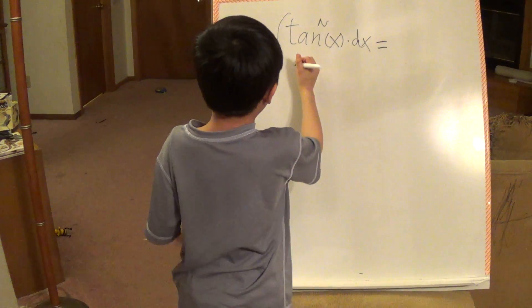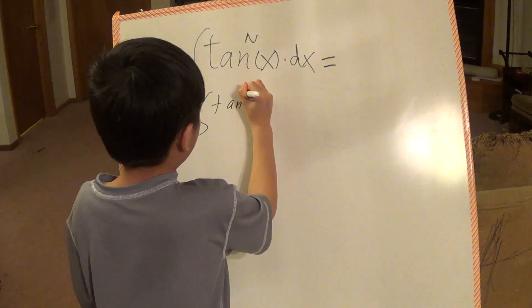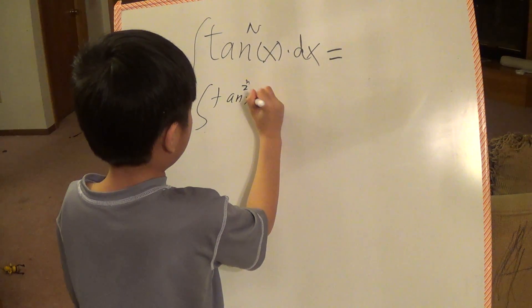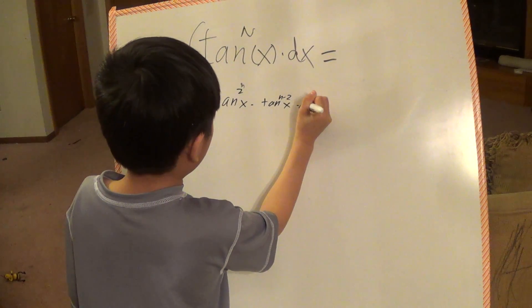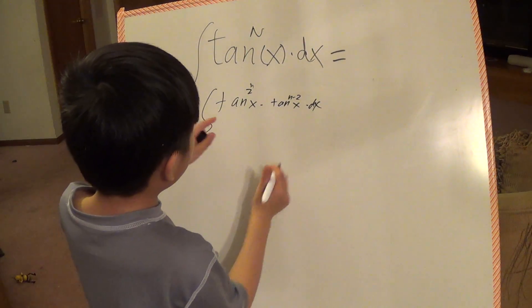First of all, you have to split it. You have to put n minus 2, because that's how you split it.